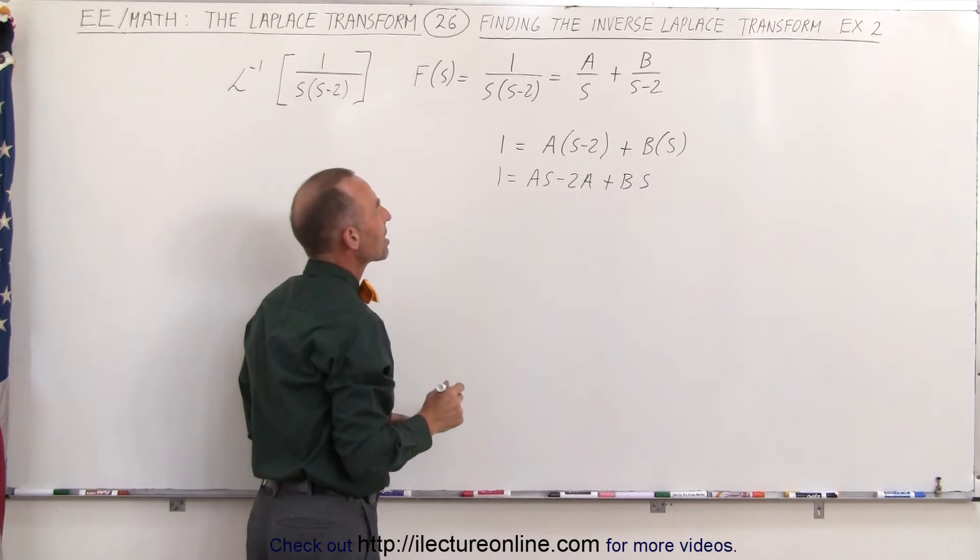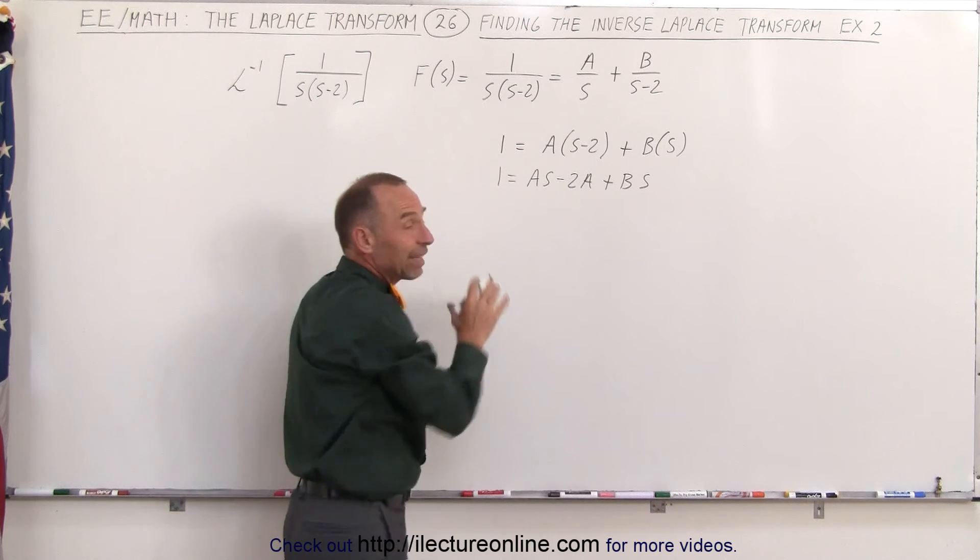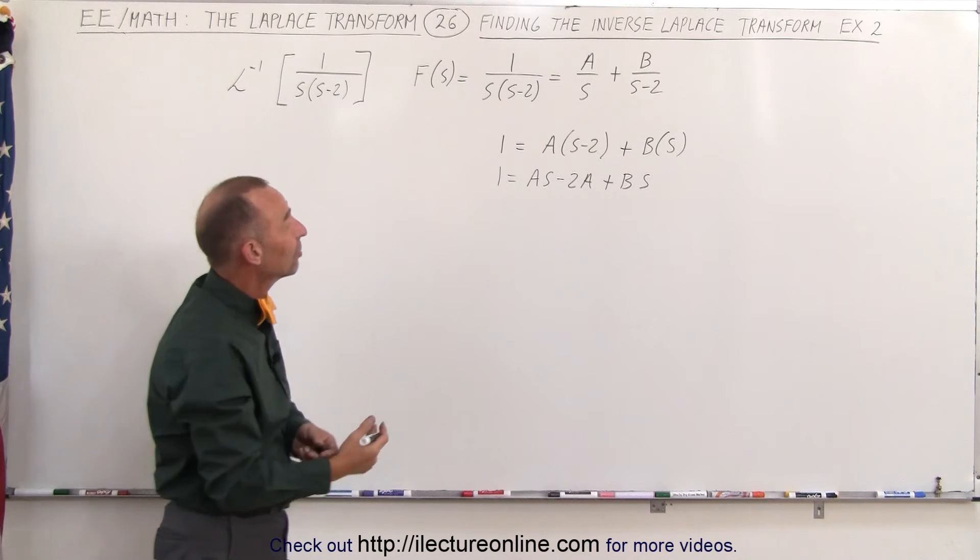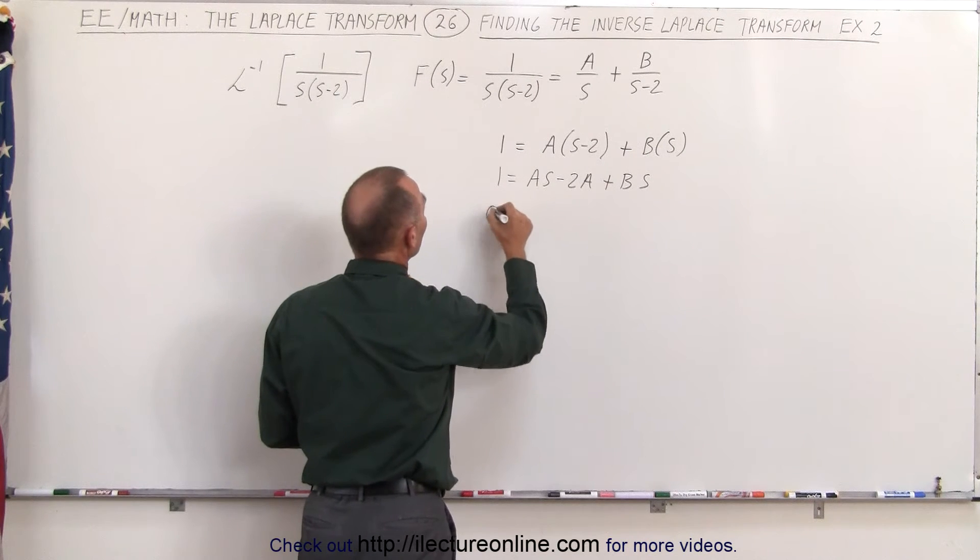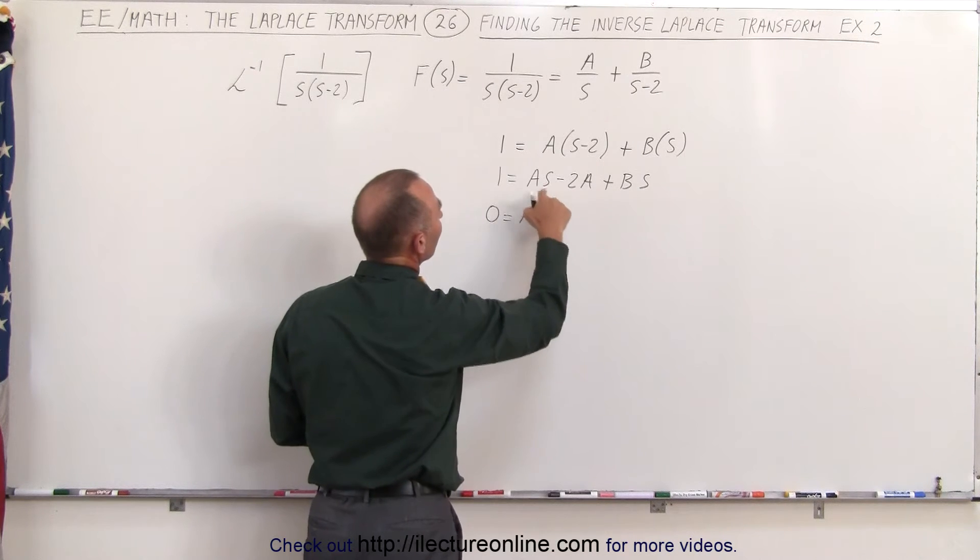Now I can see here that on the left side I don't have an s term, which means the coefficient of the s term on the left side is 0. And on the right side I have an as plus a bs, which means that 0 equals a plus b, the sum of the coefficients of the two s terms.